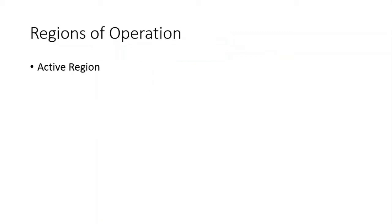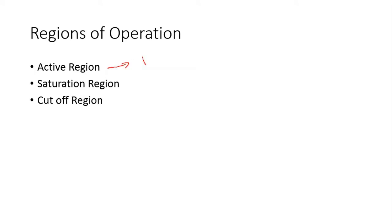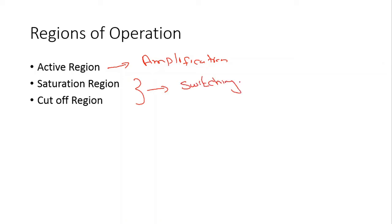We have three regions of operation of the BJT: the active region, the saturation region, and the cutoff region. In the active region, the BJT is used for amplification, and in the saturation and cutoff regions, the BJT is used for switching. That is why we say that the BJT is primarily used for amplification and switching.